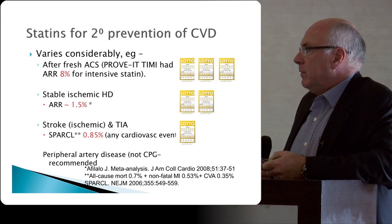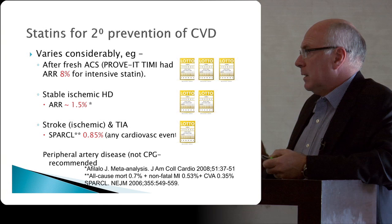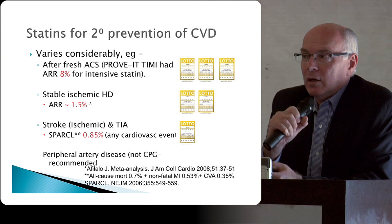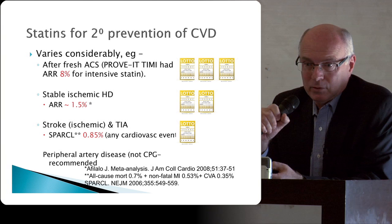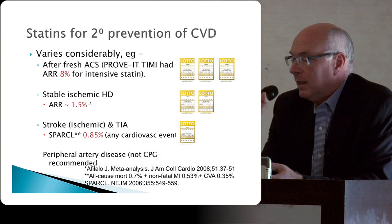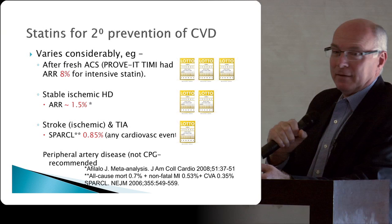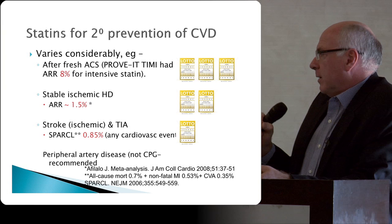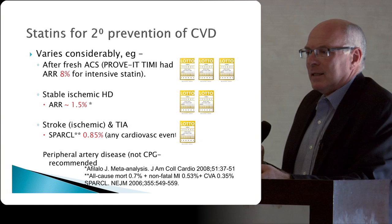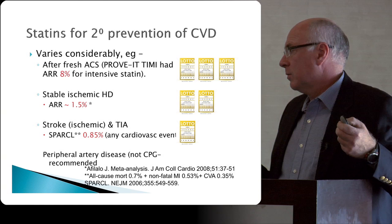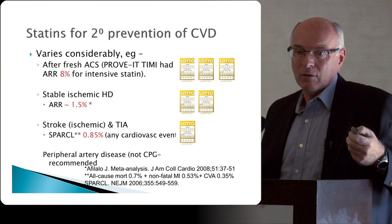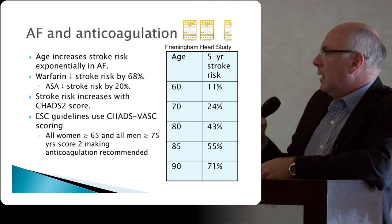Statins for secondary prevention depends on the subgroup. For a fresh MI, in the PROVE IT-TIMI study, there was an 8% payoff for intensive statins over and above moderate-dose statins — a huge payoff for high-dose statins after MI. For stable ischemic heart disease the payoff rate is about 1.5%. For stroke and TIA we're below 1%, and for peripheral arterial disease statins aren't even recommended by any guidelines.